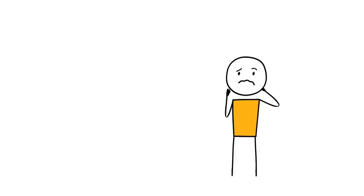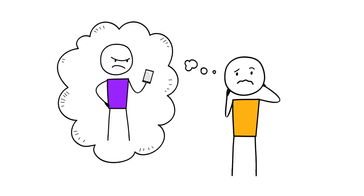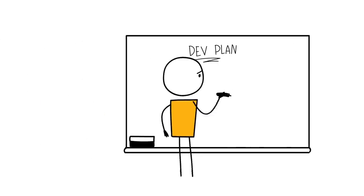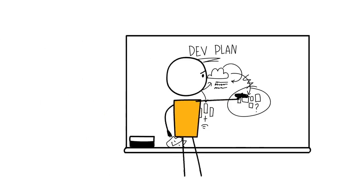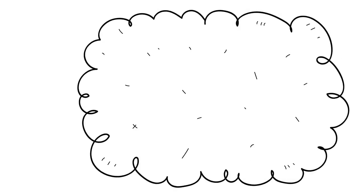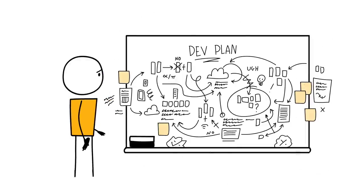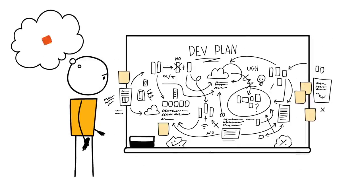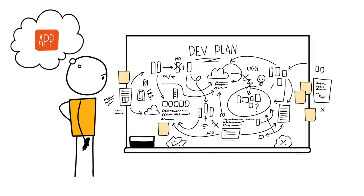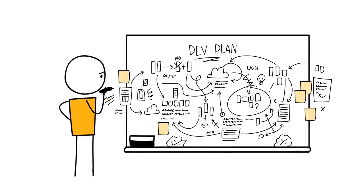But building the back end you need to support that kind of storage and synchronization is a lot of work. You have to build it, deploy it, and manage the infrastructure that it runs on. Wouldn't it be great if you could stay focused on writing your app without having to build your own back end just to support syncing and storing users' data?